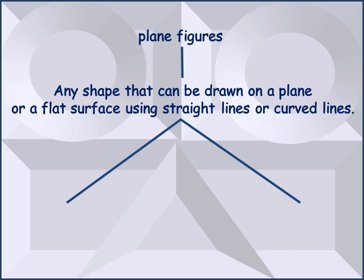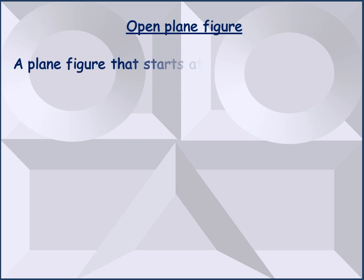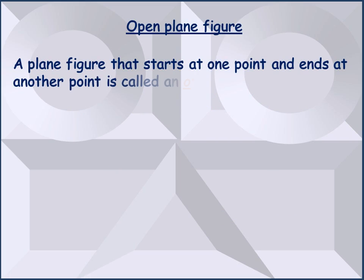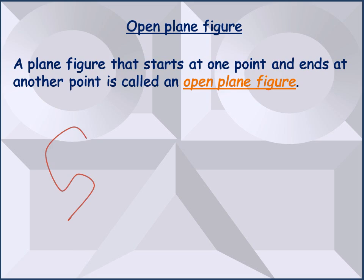Plane figures can be open plane figures or closed plane figures. A plane figure that starts at one point and ends at another point is called an open plane figure. For example, this curve which begins at the point X and ends at another point Y is an example of an open plane figure. Similarly, this curve which begins at the point A and ends at the point B is also an open plane figure.